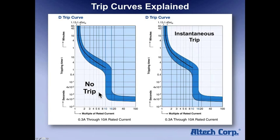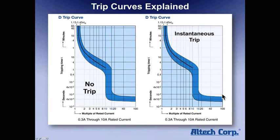So if you have a customer saying, 'I have nuisance tripping on my device, your breakers are bad' — no, they are not bad. They just picked the wrong trip curve. On the flip side, if you have a short circuit, that's usually 50 to 100 times the rated current. So if you're in that millisecond area and you have a 100 amp short, it will trip immediately because now you're in the instantaneous trip zone.